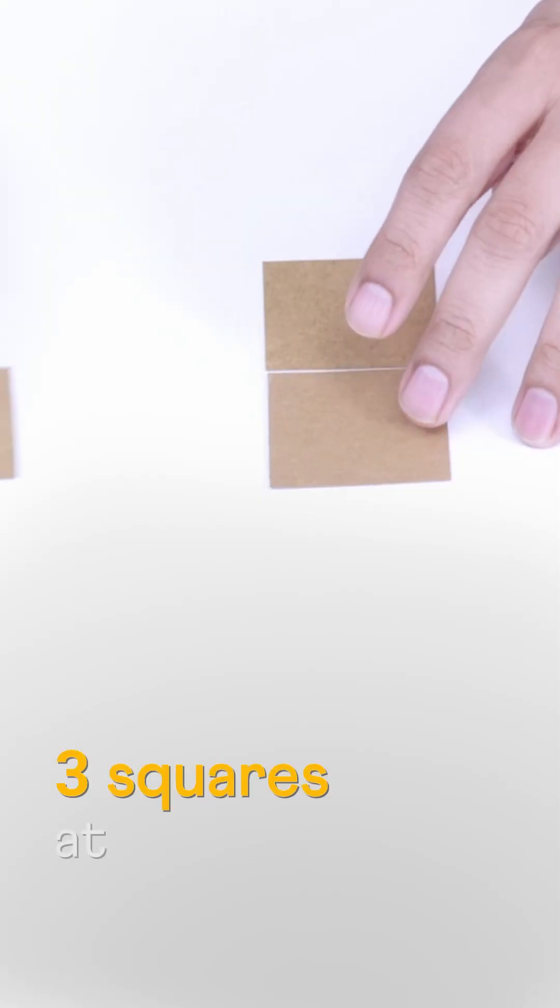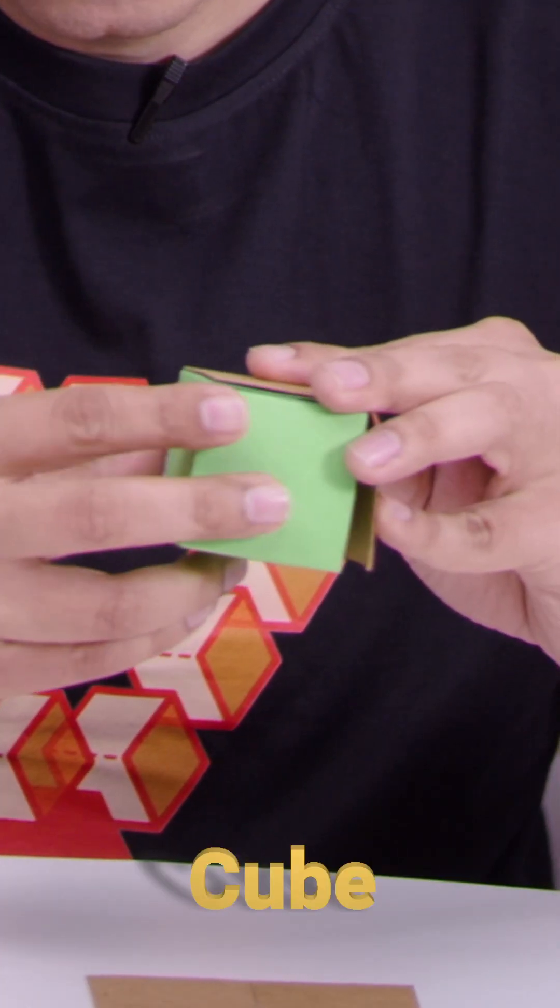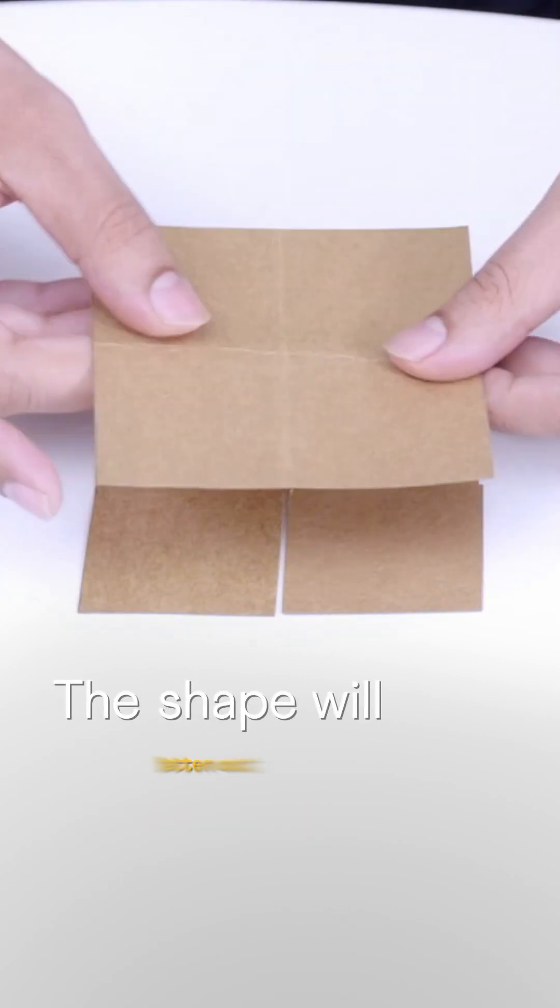Let's try squares. Three squares at a corner, we get a cube. With four squares the shape will flatten out again.